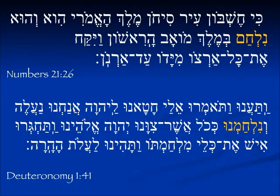Numbers 21:26 talks about the city of Heshbon, that it was the city of Sihon the king of the Amorites, and he had fought against the king of Melech Moab. So this is who nilcham by Melech Moab — he fought, third person singular. In Deuteronomy 1:41 Moses is recounting the many things that happened in the desert. They decided they had sinned and said they would go up and fight. So we see anachnu na'aleh — we will go up — v'nyilchamnu — and we will fight — conjugated in the perfect tense but the vav makes it conversive for the future.